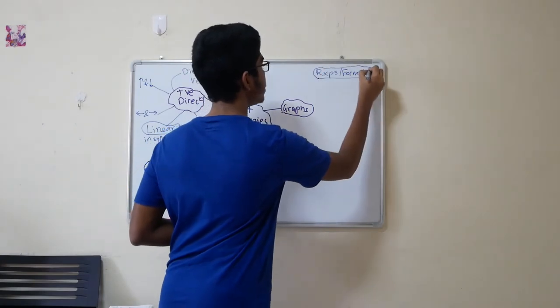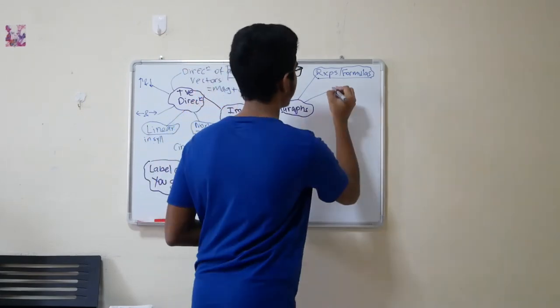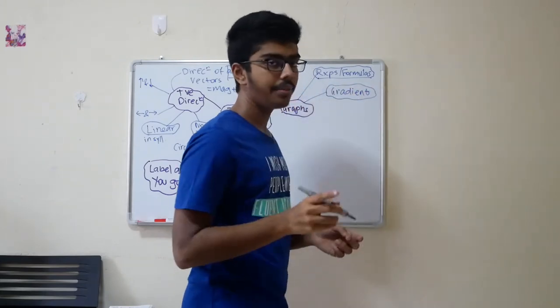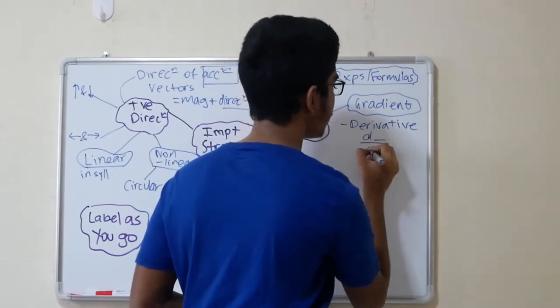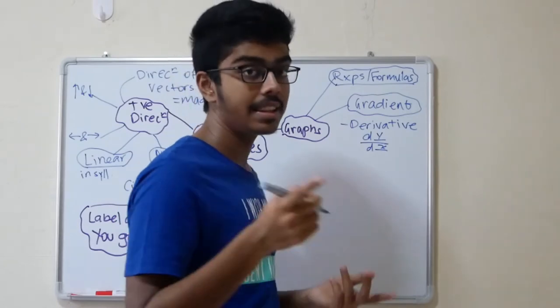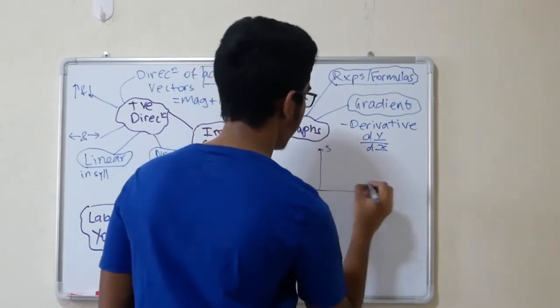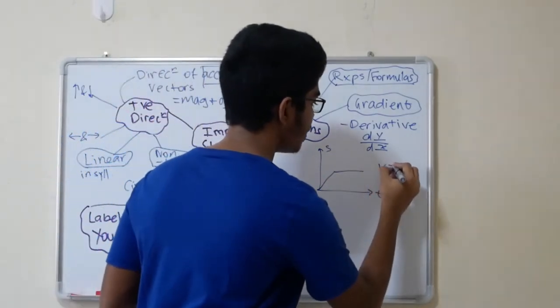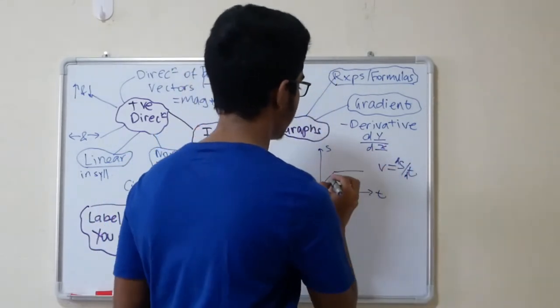Besides relationship and formulas, what is the second thing that you guys should take note? The gradient of a graph. Extremely important. The gradient of the graph is basically a derivative. You guys study this in math, right? D something over dt. So, it's d something over d something. This is the y-axis. This is the x-axis. So, just replace it. So, calculate the derivative. Let's look at some examples. If you have an st graph like this, what does the gradient represent? The velocity. Because v is s over t, or ds over dt. So, this represents the velocity.